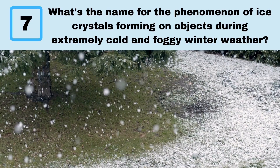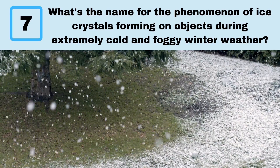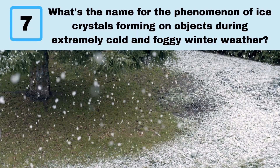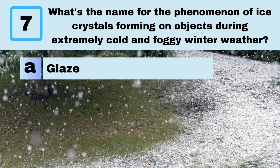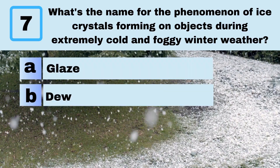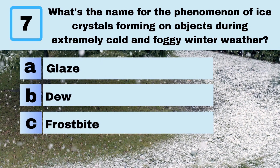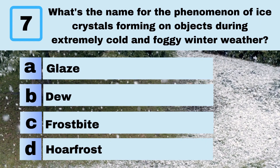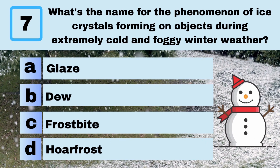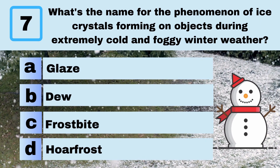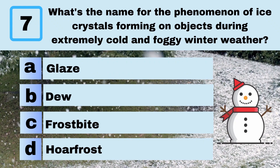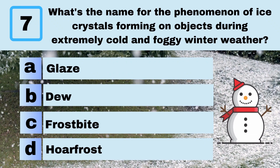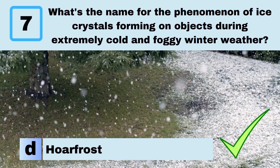Question 7. What's the name for the phenomenon of ice crystals forming on objects during extremely cold and foggy winter weather? A. Glaze. B. Dew. C. Frostbite. D. Hoarfrost. Answer: D. Hoarfrost.